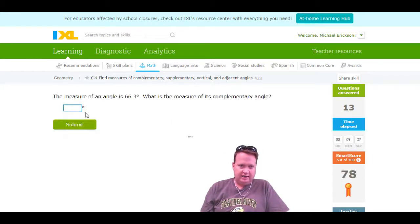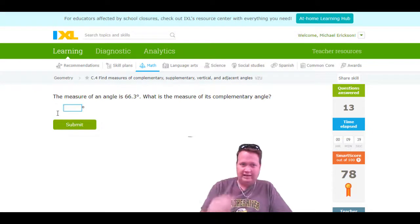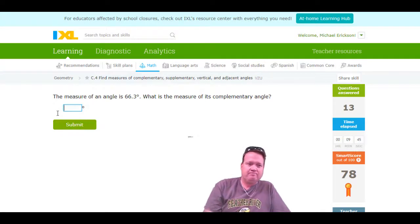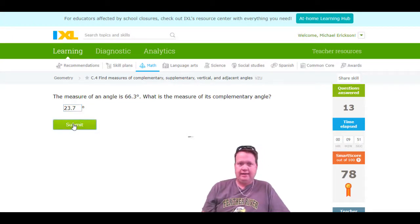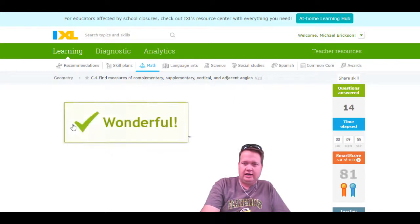I guess I could do this one. A complementary angle means it adds up to 90. To add up to 66 is going to be 23.7, I think. And that's going to be it. All right, so good luck. Go get your work done and enjoy your weekend.